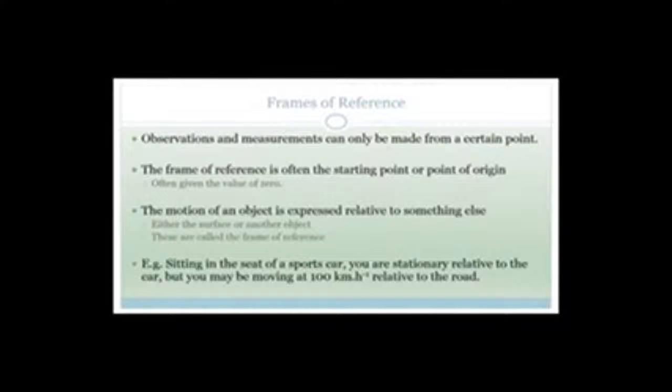Now let's talk about frames of reference, because they are very, very important and help us understand velocity, speed, and related concepts. Observations and measurements can only be made from a certain point. When you are watching something, you are looking at it from a certain frame of reference — a specific point of view. The frame of reference is often the starting point or origin and is given the value zero. The motion of an object is expressed relative to something else, such as the surface or another object.